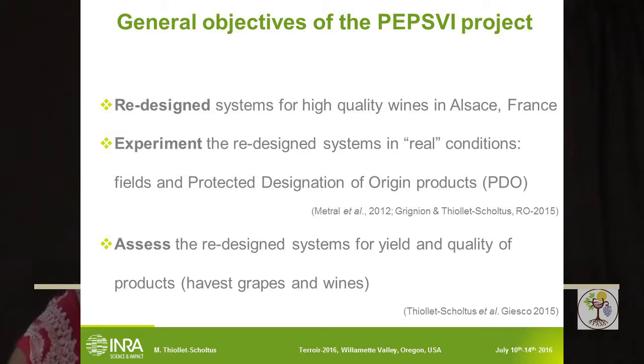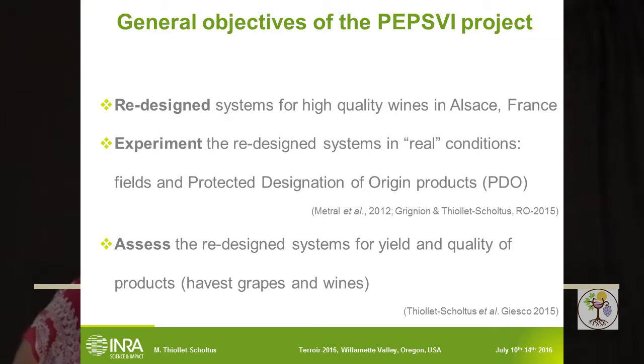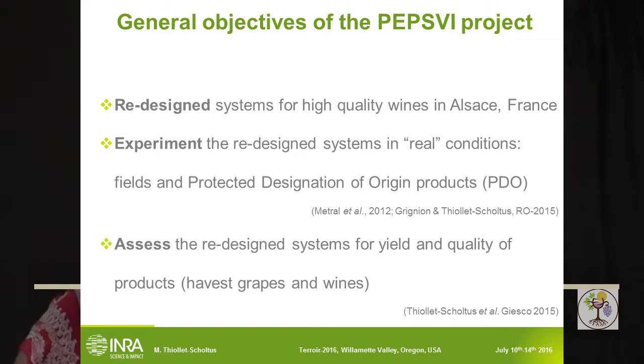The point of this presentation is the results of assessment of flora diversity according to outstanding factors. The general objectives of the big project are redesigning cropping systems under a special set of constraints — high quality wines in protected designations of origin areas. We experiment with the redesigned systems in real conditions, in fields of average Alsace vineyard size in a classical winery, and assess the systems particularly targeting yield and quality of the product.